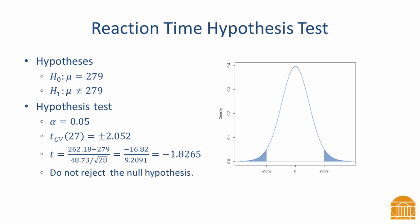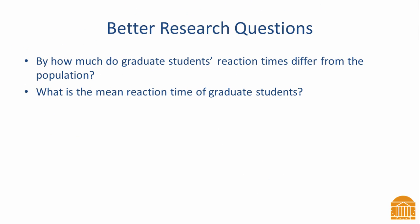Even if we had rejected it, we would have only learned what the mean is not. That leaves an infinite number of other possibilities. What we really would like to know is the actual value of the parameter. A better research question is, by how much do graduate students' reaction times differ from the general population? Or, what is the mean reaction time for the entire population of graduate students?